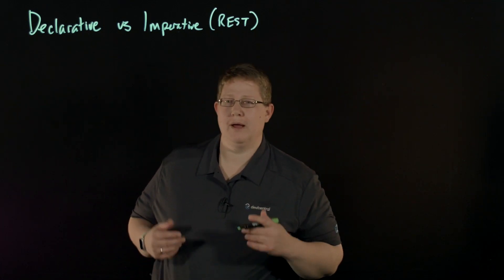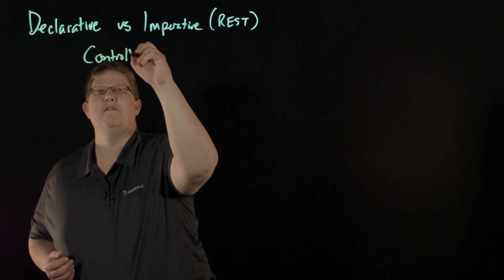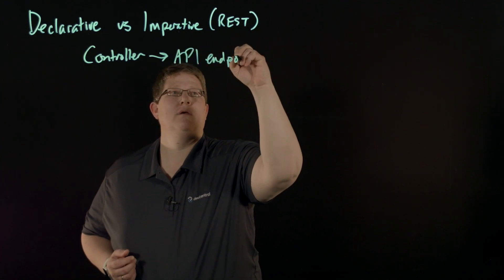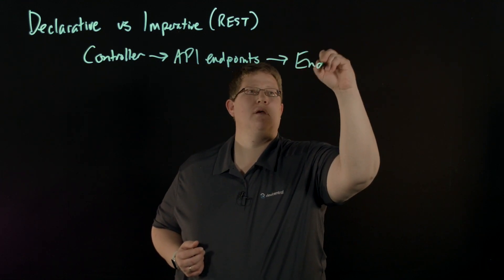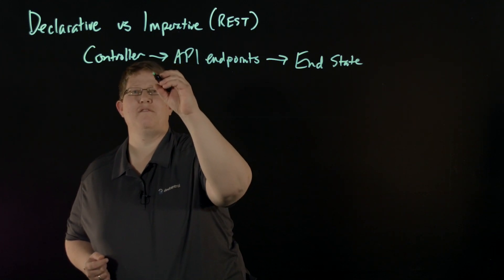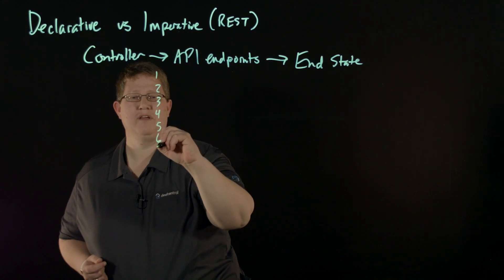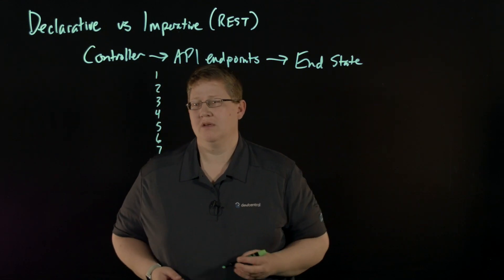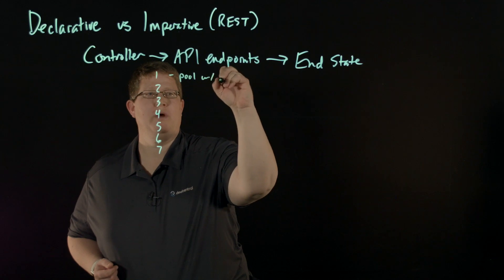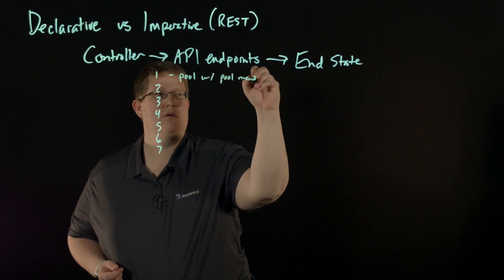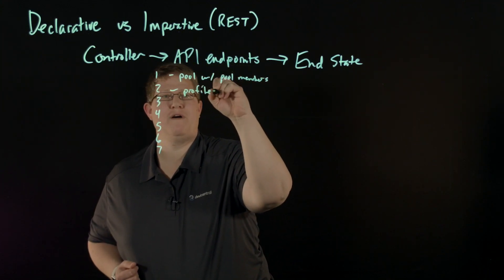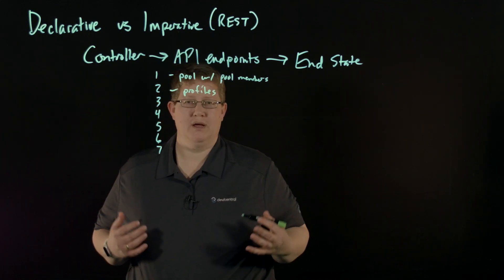If you look at it from the standpoint of having a controller, API endpoints, and an end state — with imperative, you have maybe one, two, three, four, five, six, seven different things that need to happen. So if you're establishing a virtual server, you need to define a pool with pool members, and that's one call. Then you need to establish some profiles.